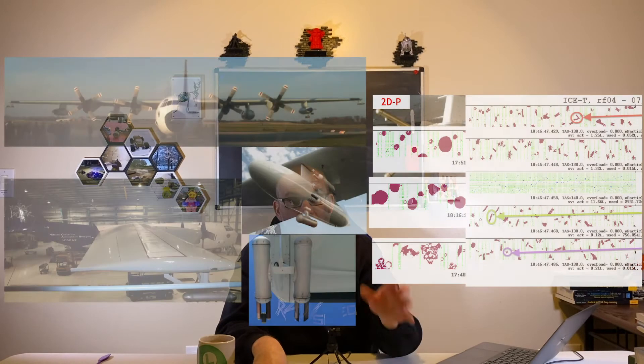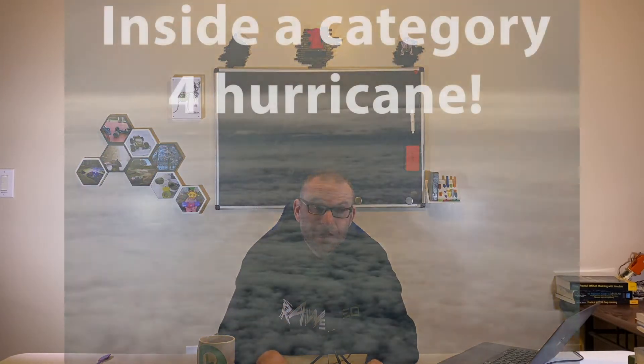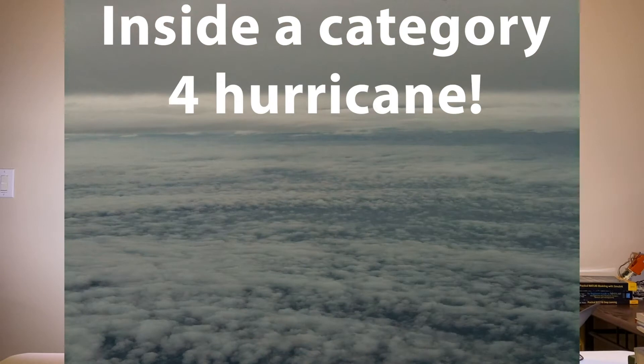So I got to fly on the C-130 and the DC-8 with a bunch of different types of instruments on the plane where we could actually fly through clouds. On the NASA side, we were actually flying through hurricanes. So that was very exciting.